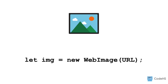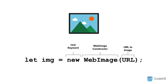Let's try adding an image to the canvas. First, we need to create an image. To create an image, we write the new keyword, the WebImage constructor — which is WebImage with a capital W and I — followed by parentheses. Between the parentheses, we write a string of the URL to the desired image. And to be able to refer to the image, we will store it in a variable.